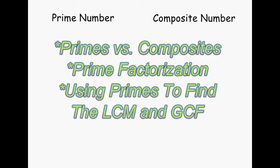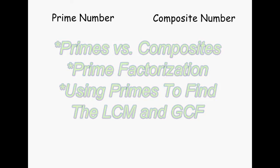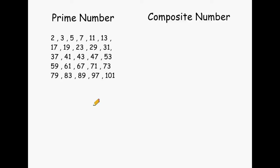In this lesson, we're going to demonstrate the difference between a prime number and a composite number. A prime number is simply a number with exactly two factors, and those factors will always be 1 and the number itself. On the screen, I have the first prime numbers listed all the way through the number 100 and a little bit over 100. The only factors of all the numbers listed are 1 and the number itself.